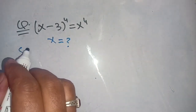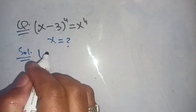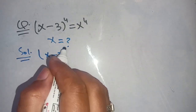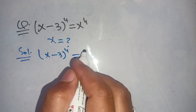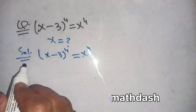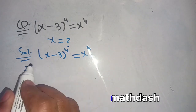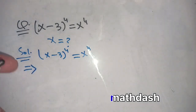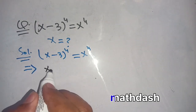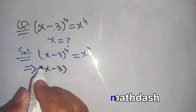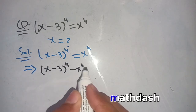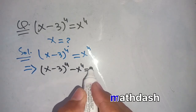First of all, we write the equation as it is: (x minus 3) whole power 4 is equal to x power 4. In the next step, we shift x power 4 from the right-hand side to the left-hand side, giving us (x minus 3) whole power 4 minus x power 4 is equal to 0.